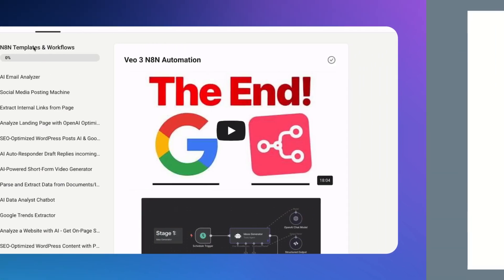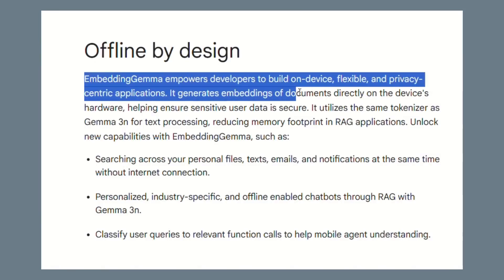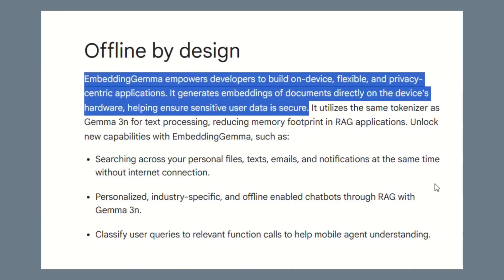Most embedding models need the cloud — your data goes to Google's servers or OpenAI's servers. That's a privacy nightmare, especially for businesses. But Embedding Gemma changes everything. Your data stays on your device: no cloud, no servers, no privacy risks. This is huge for companies handling sensitive information.